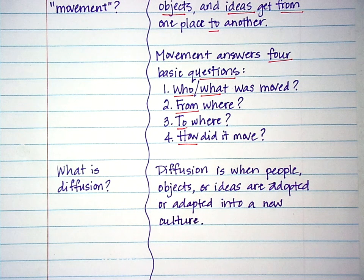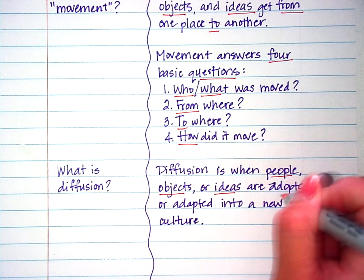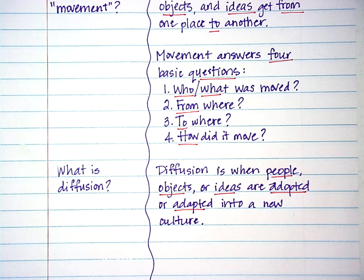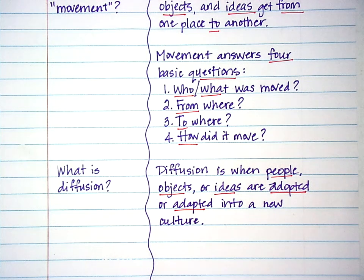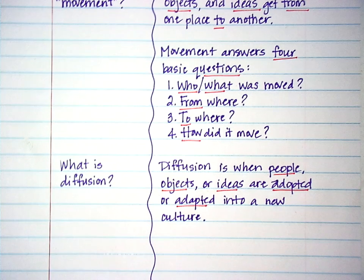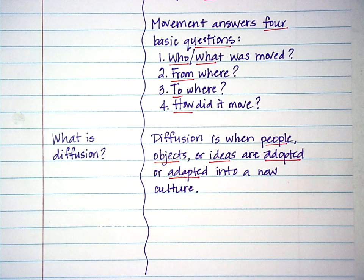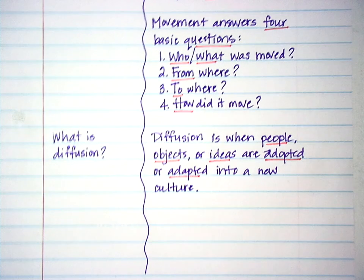And once again, taking your highlighter, I'm going to underline some of the key words for diffusion. People, objects, ideas, adapted, I'm sorry, adopted and adapted. So when we look at movement, you're not only just looking at who or what was moved from where to where and how, but you'll also need to look at how it was adopted or adapted into the new culture. Sometimes it's adopted as is with little to no change. And then other times it's actually adapted where there's a change to it, someone's put a new twist on it and made it their own.